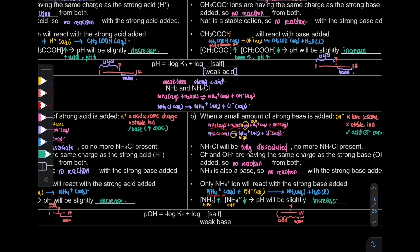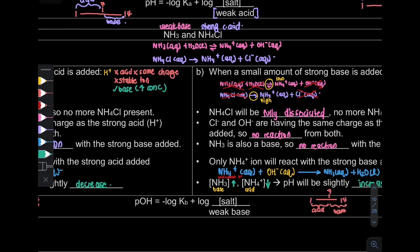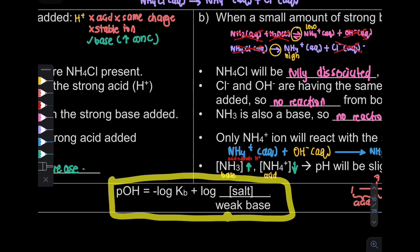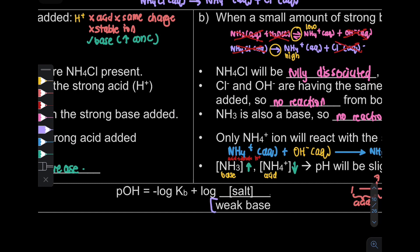That is the explanation. For the calculation, the formula is: pH equals negative log Kb plus log of the concentration of salt divided by concentration of weak base. Sometimes Kb is given. Once you find pOH, you can find pH of the basic buffer using: pH plus pOH equals 14.